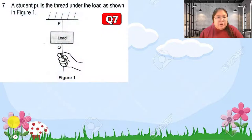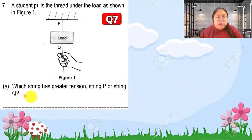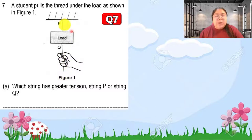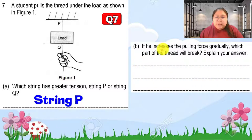Now the structure question, number seven: a student puts a thread under a load as shown. There are two threads — thread P above the load and thread Q below. The hand pulls thread Q. The question asks which string has greater tension. Thread Q only experiences one pulling force. Thread P experiences two forces: the weight of the load and the pulling force. So string P has the greater tension.